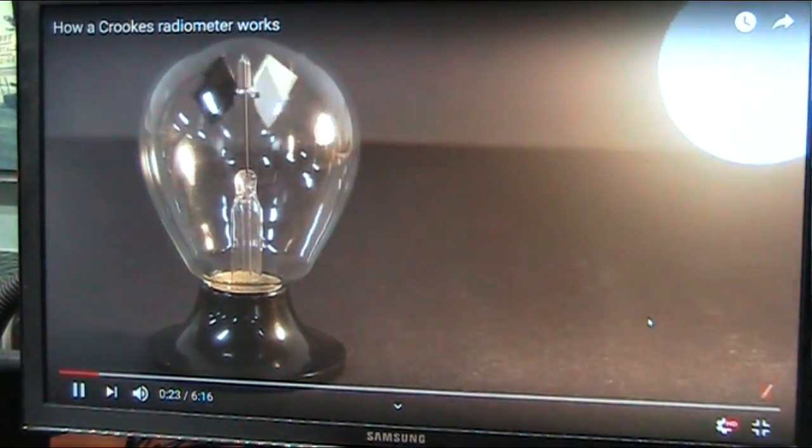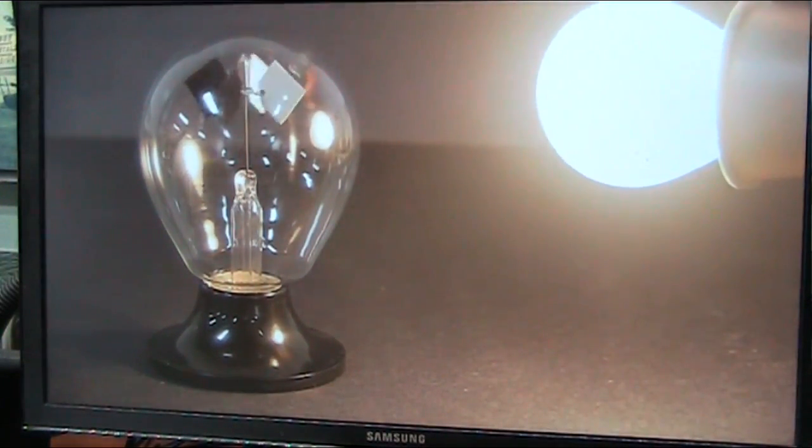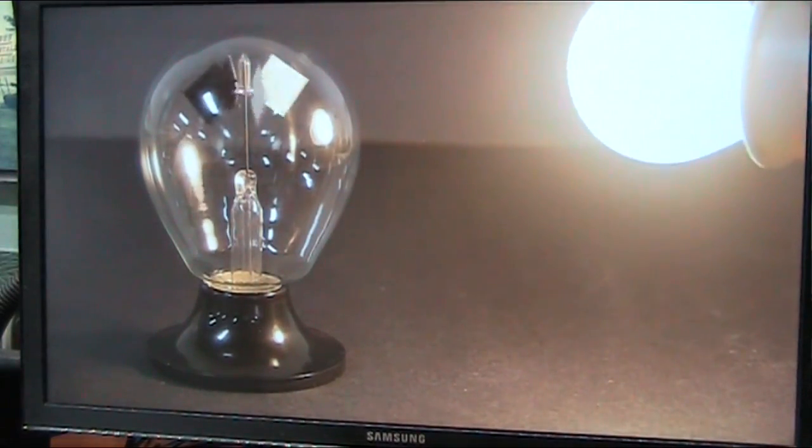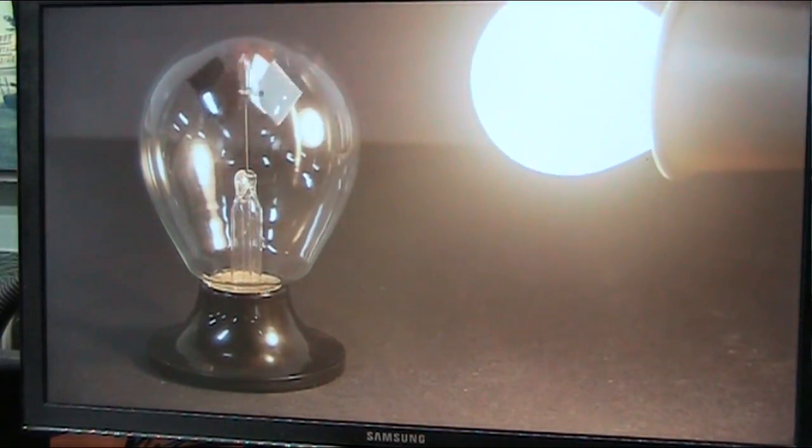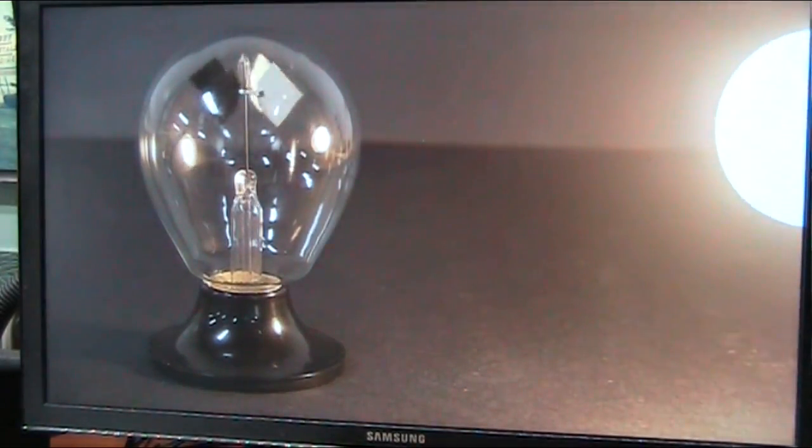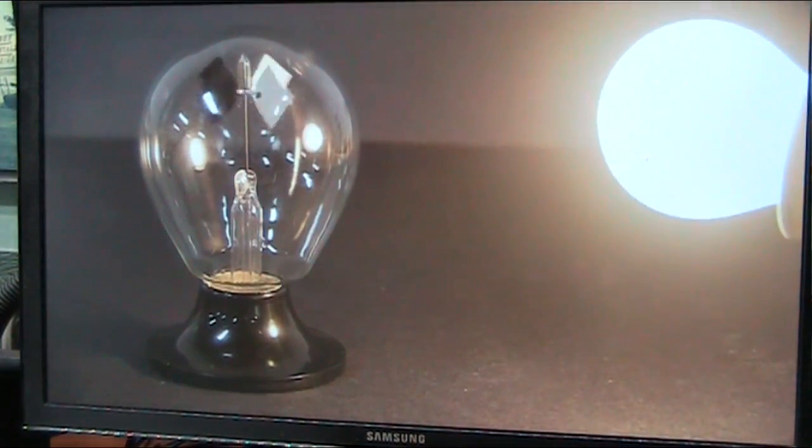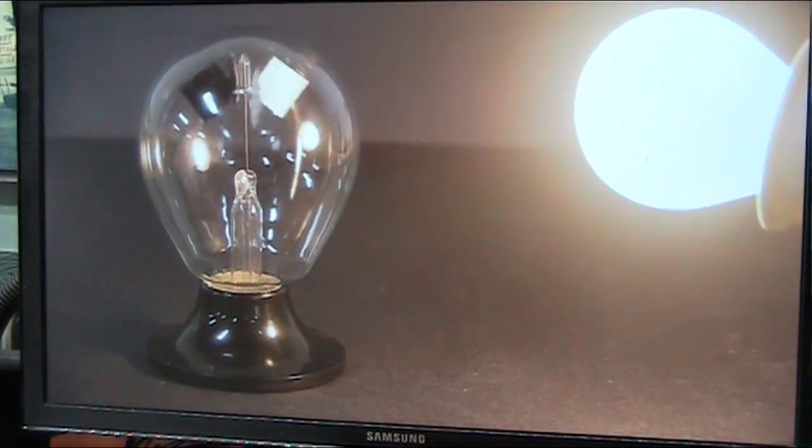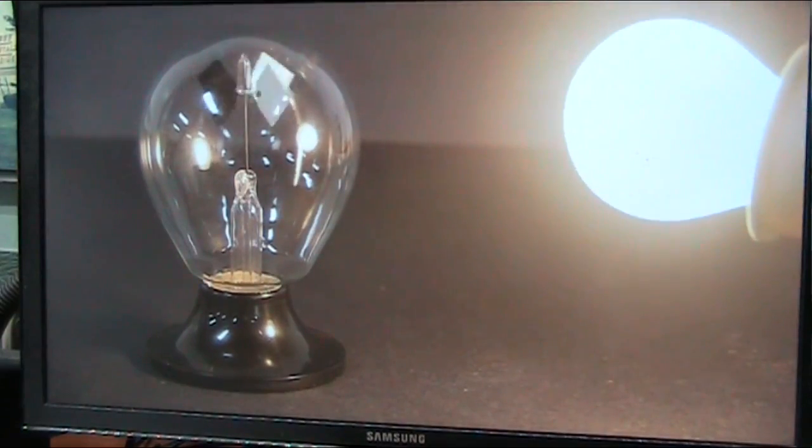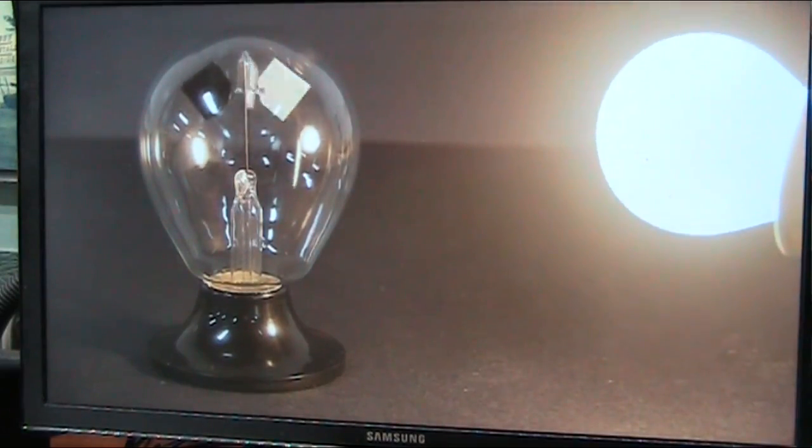Something to do with the photons themselves. So the photons that are emitted by the lightbulb hit the radiometer and it's actually the momentum of the photons that cause it to spin. However, look more closely. As you can see, it's actually the black face that's trailing, meaning that there's more force on the black face than there is on the white face of the radiometer vanes.